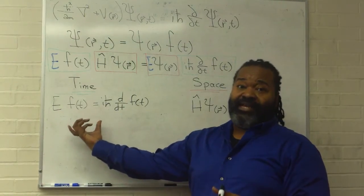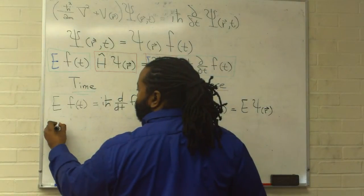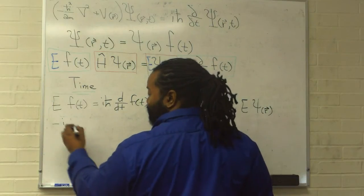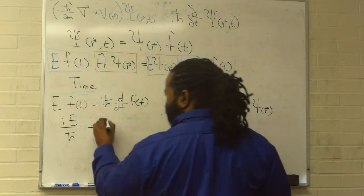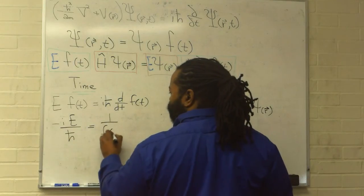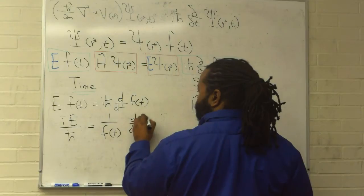This is something that we can actually solve. If we separate out everything, doing a little bit of algebra, we'll get minus iE over h-bar equals one over f times its derivative.